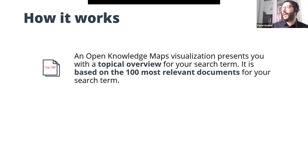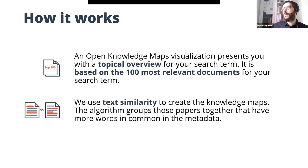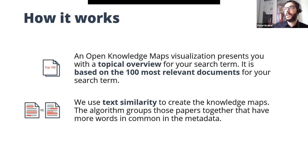How does it work? We use the 100 most relevant documents from either BASE or PubMed — relevance is defined by the subject similarity between your query and the metadata of the documents. We then perform text similarity analysis, looking at how many words papers have in common in the metadata. Based on this, we perform clustering and layout algorithms that create the map, so papers with more words in common will more likely be clustered together and placed closer on the map.